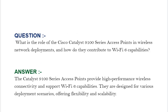Our next interview question is: what is the role of the Cisco Catalyst 9100 series access points in wireless network deployments and how do they contribute to Wi-Fi 6 capabilities? Your answer should be: the Catalyst 9100 series access points provide high-performance wireless connectivity and support Wi-Fi 6 capabilities. They are designed for various deployment scenarios, offering flexibility and scalability.